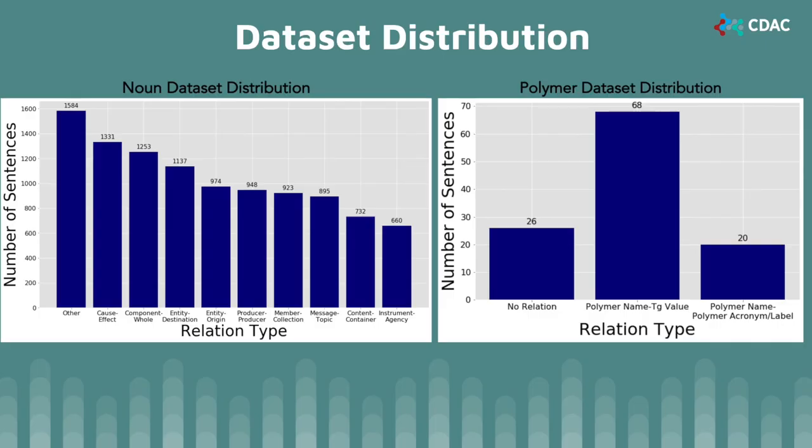For our project, we used two different datasets. Pictured on the left, a noun dataset consisting of 8,000 sentences, and on the right, another smaller polymer dataset consisting of 114 sentences. Usually it's hard to generalize NLP models among different domains because language is domain-specific. We wanted to show that our model was built from a baseline for extracting noun relations, and it can also be applicable to a dataset from a completely different field.